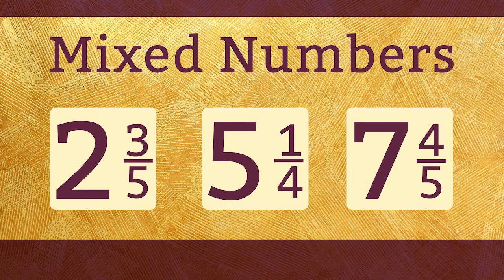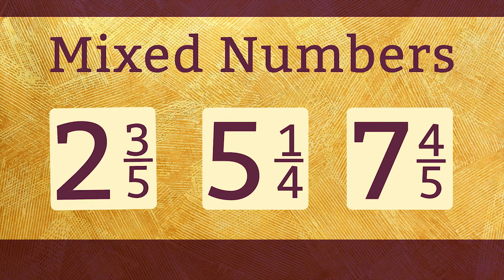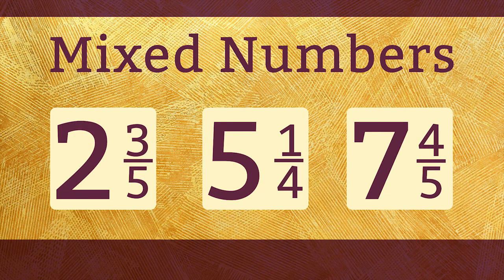A mixed number is a number that includes both a whole number part and a fraction part. 2 and 3 fifths, 5 and 1 fourth, and 7 and 4 fifths are examples of mixed numbers.